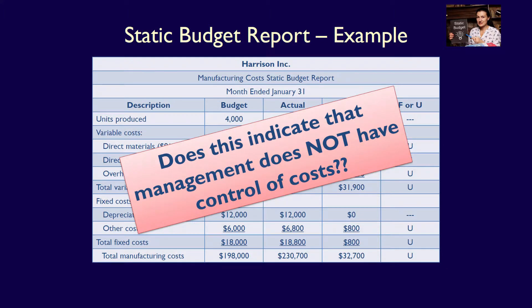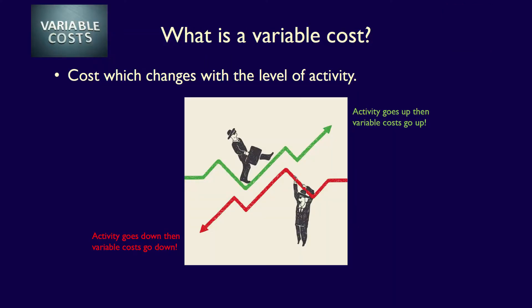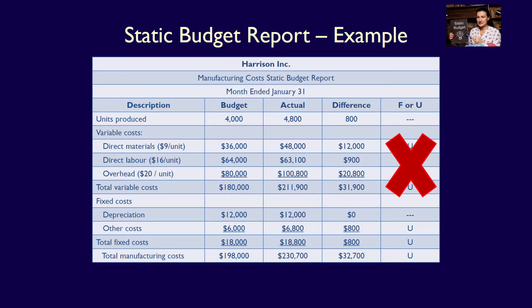Can we say that management is clearly terrible at controlling costs because overall there was an unfavorable variance of $32,700? Actually, no, we can't — because there is a difference in the level of activity. Variable costs increase when the level of activity increases, so it's totally reasonable to see variable costs increasing when production goes from 4,000 budgeted units to 4,800 actual units. Since the level of activity between the budget and actual is different, we should never use the static budget report to evaluate management's ability to control variable costs.